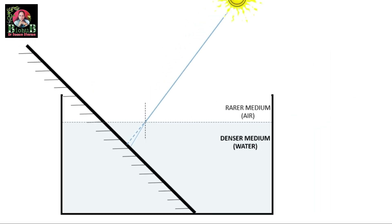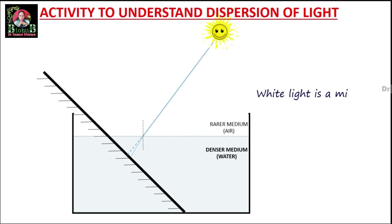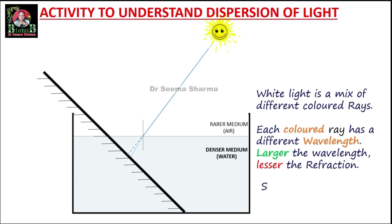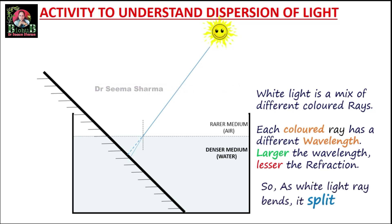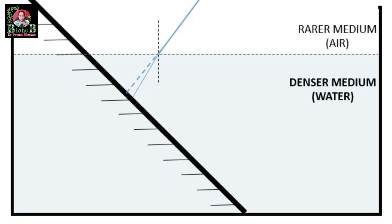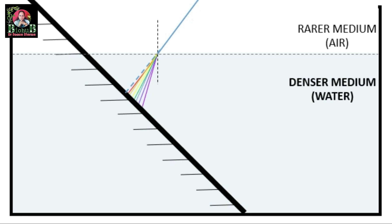We also know that sunlight is made up of seven colors, and each colored light has its own specific wavelength. So while bending, splitting of sunlight into its constituent colors also takes place as per their wavelength. Longer the wavelength, lesser the bending. This can be noticed in the close-up where the red colored ray has shown the least bending, whereas maximum bending is visible in the case of the violet colored ray.